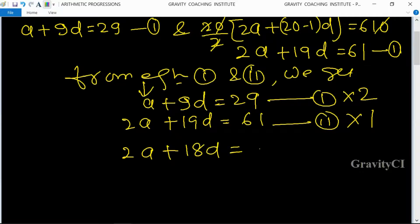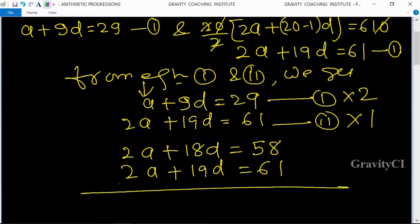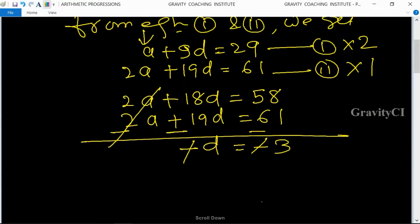2A plus 19D equals 61, minus 2A cancels, so minus D equals minus 3. Minus cancels, so D equals 3.